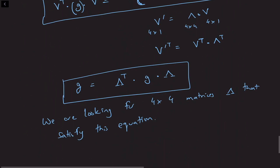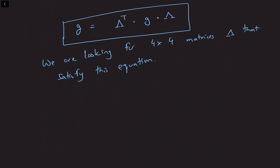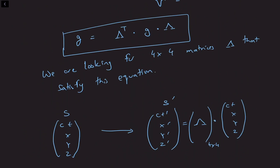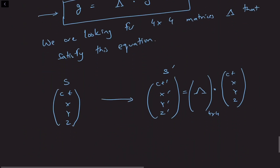We're going to look for a set of transformations from a coordinate system S, where we have coordinates for space-time points denoted as t, x, y, z. We're going to transform them to a new set of coordinates: t prime, x prime, y prime, z prime, which are related to the old coordinates through a four-by-four transformation matrix lambda. The matrices lambda satisfy an equation where g is the space-time metric — a particular four-by-four matrix.